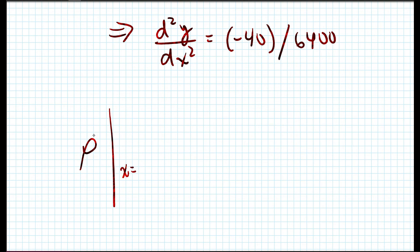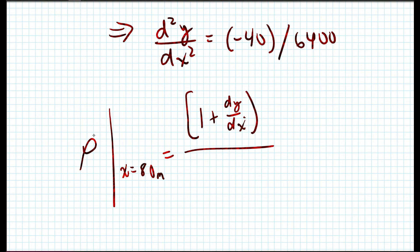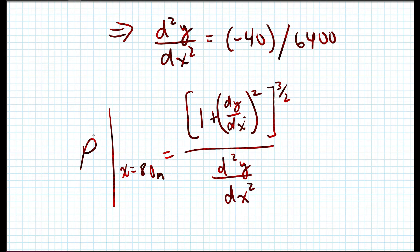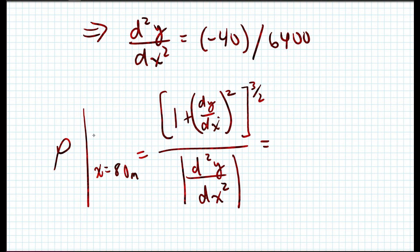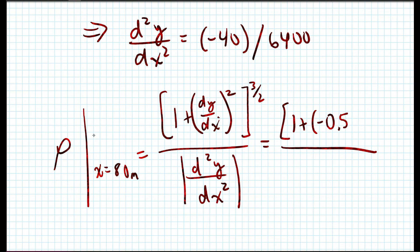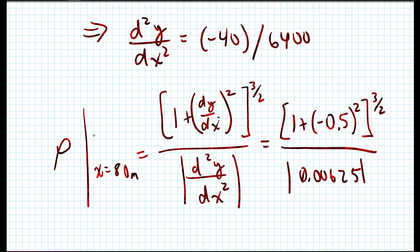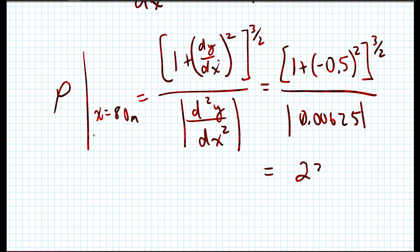The radius of curvature at x = 80 meters is ρ = (1 + (dy/dx)²)^(3/2) / |d²y/dx²|. Substituting: ρ = (1 + (−0.5)²)^(3/2) / 0.00625, which gives ρ = 233.6 meters.